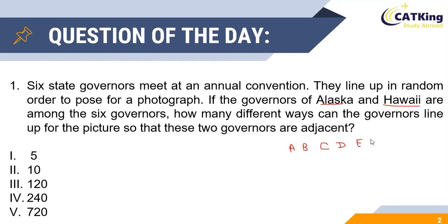For the picture, the governors of Alaska and Hawaii — let us call them A and B — should always be adjacent. Hence we need to find the number of ways of arranging five different people, considering the governors of Alaska and Hawaii as a single entity. That will be equal to 5P5, or 5 factorial, which is equal to 120.